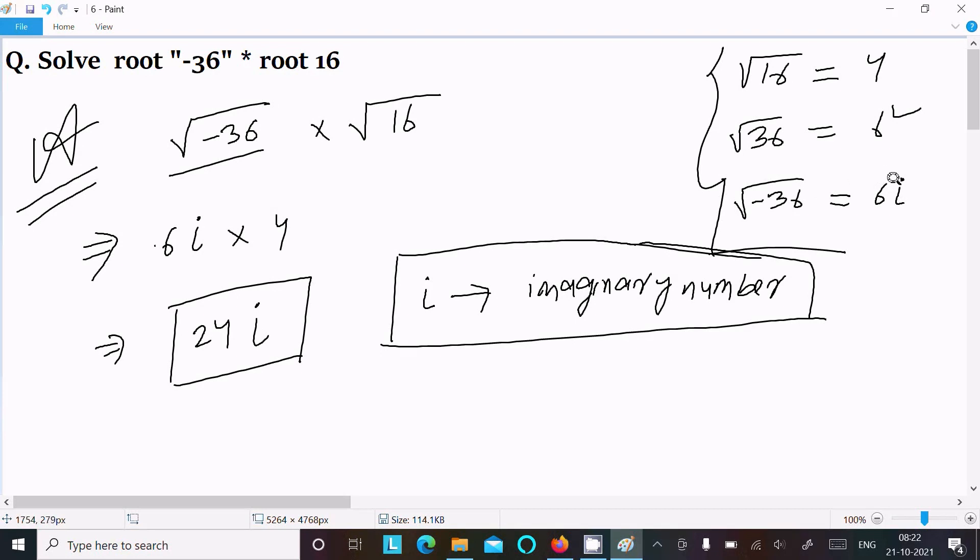So that's for imaginary number, that's the indication. So the value of this question is 24i. Okay, so this is the way we can solve this question. I hope this video is helpful for you. Now this video is over, so thanks for watching. See you next time, thank you.